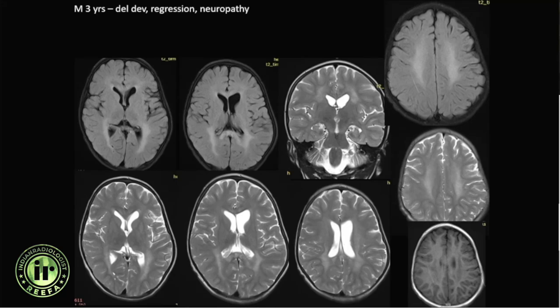Another patient — a three-year-old male with delayed development, regression, and neuropathy — presented with diffuse periventricular signal abnormality. The differentials considered were MLD, INAD, and mitochondrial disorders. Because of the typical periventricular involvement, this was confirmed as MLD — metachromatic leukodystrophy.